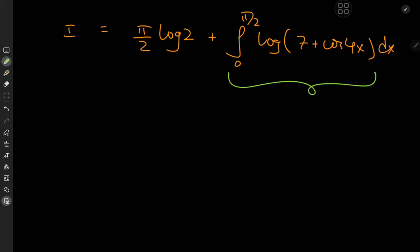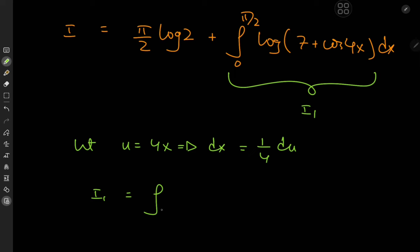This new integral is itself a pretty interesting case study, so let's call it I₁. To solve it we'll make the substitution u = 4x, implying dx = (1/4)du. As x goes from 0 to π/2, u goes from 0 to 2π, giving I₁ = (1/4) times the integral from 0 to 2π of log(7 plus cosu) du.